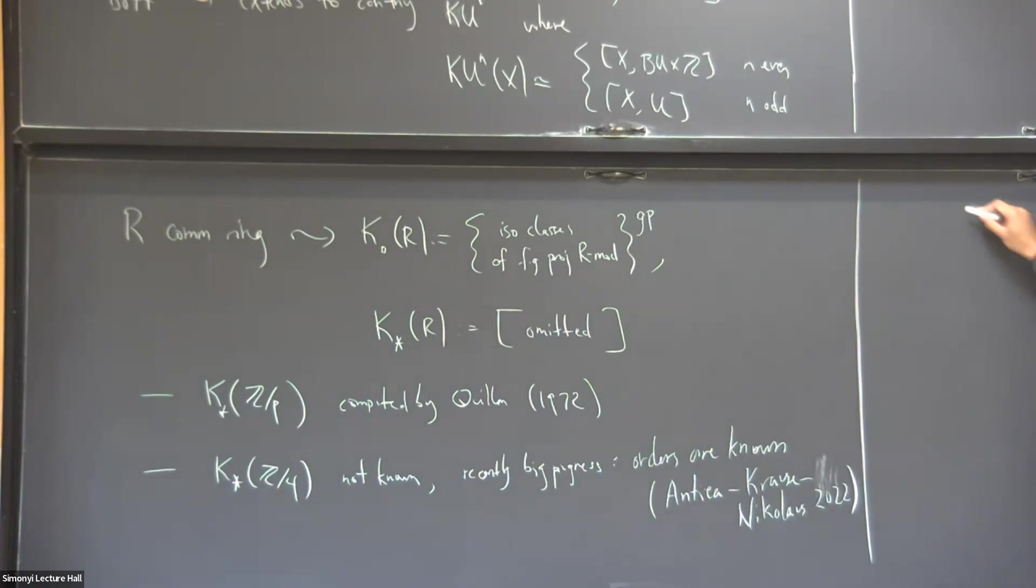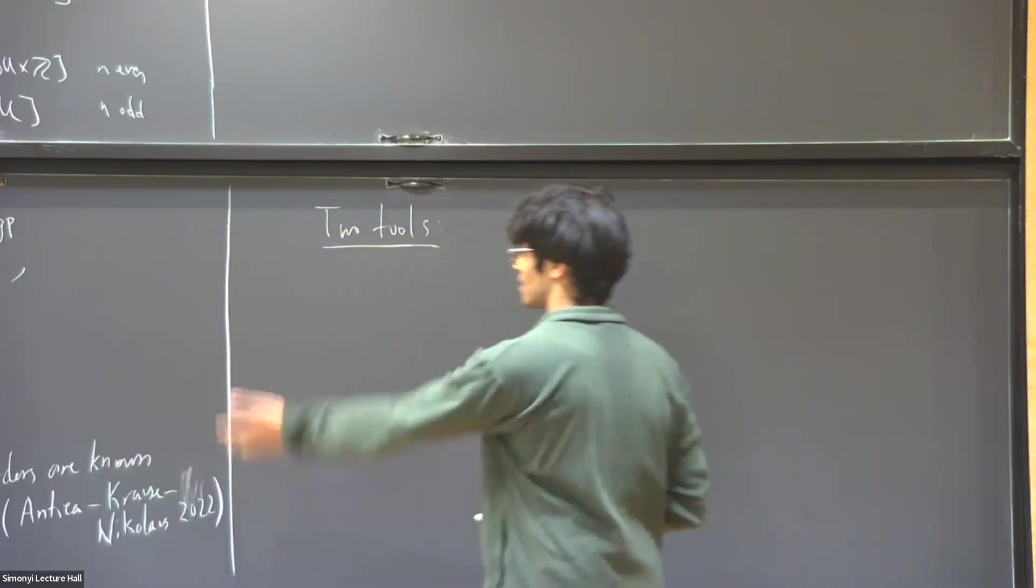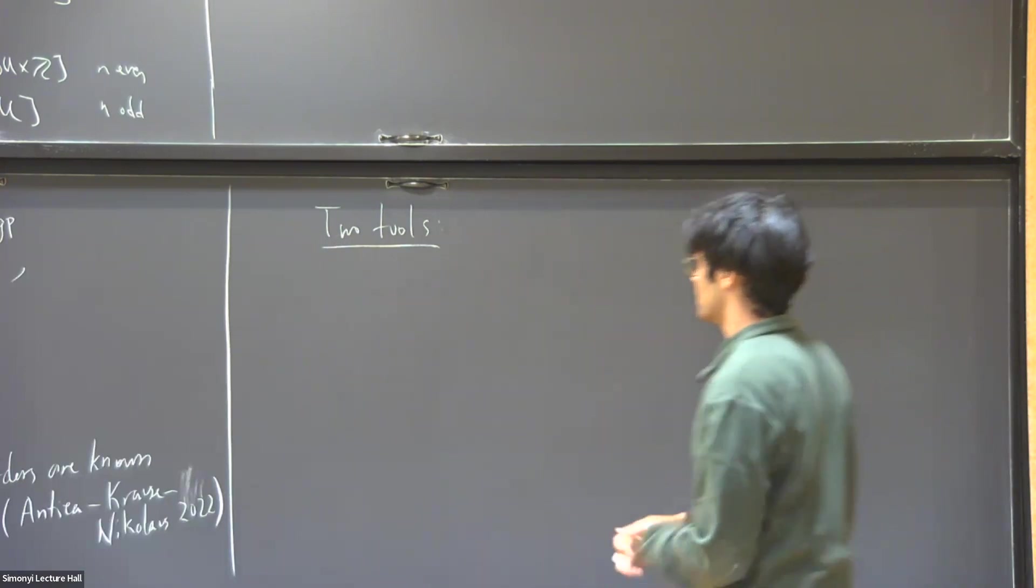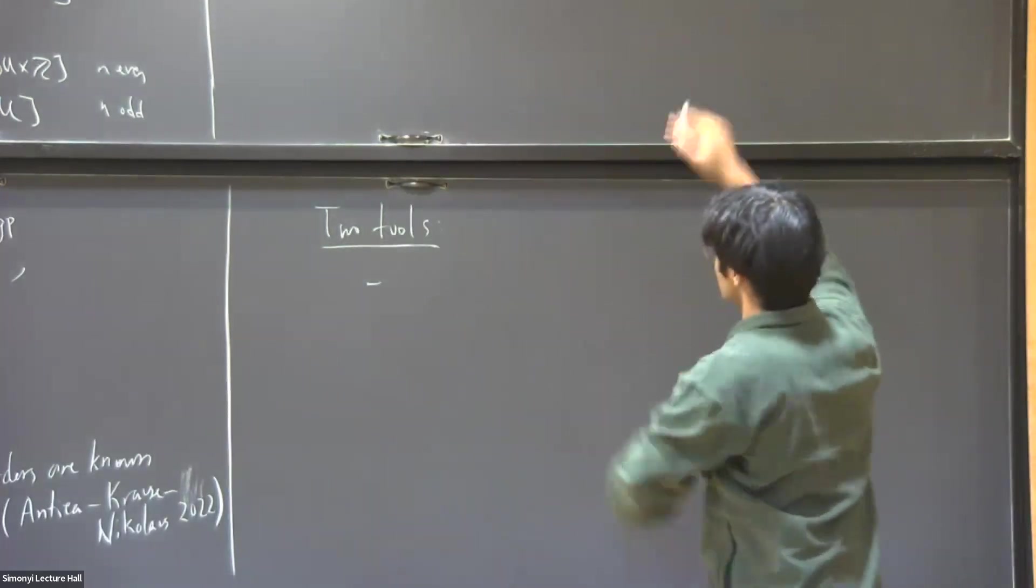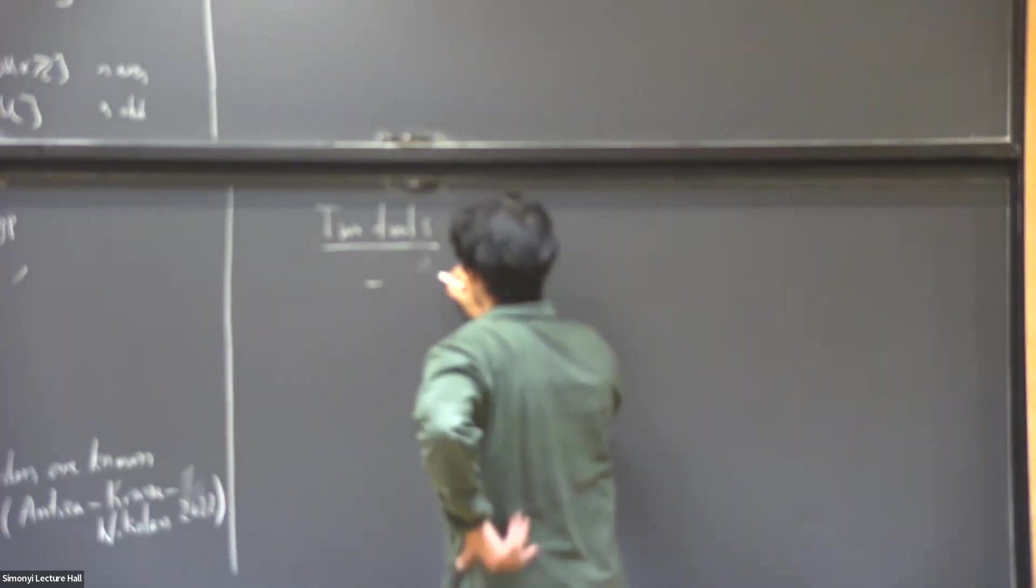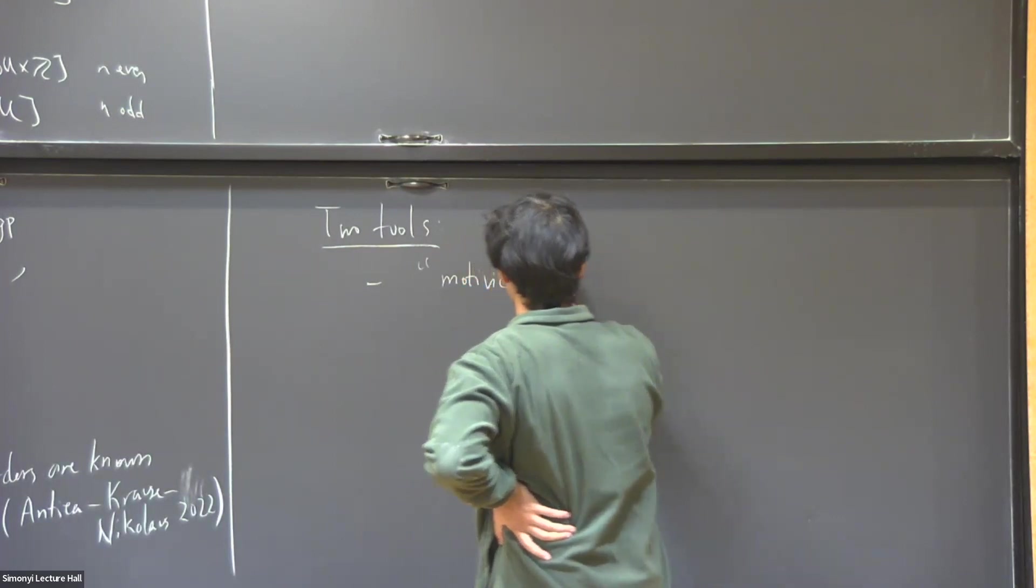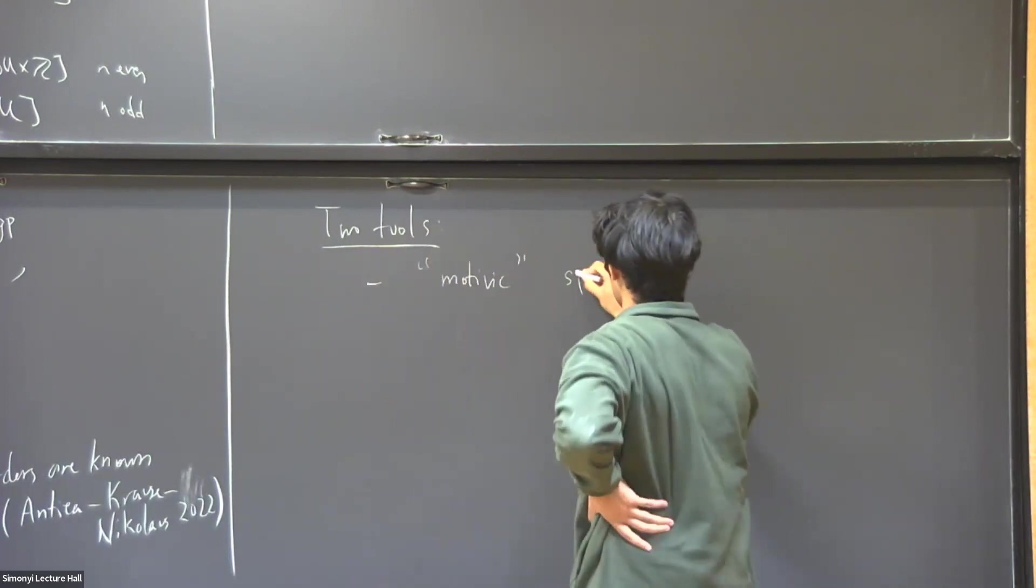So there's two, I mean, I like two kind of tools that are useful in attacking these K-groups in general. So one is trying to build some analog of the spectral sequence. And in this setting, for reasons I won't go into, they're called motivic spectral sequences. That's the motivic filtration of the title.